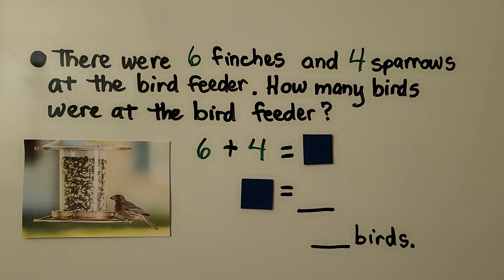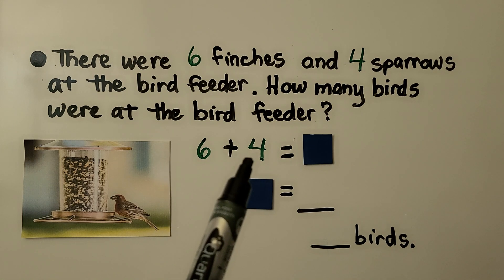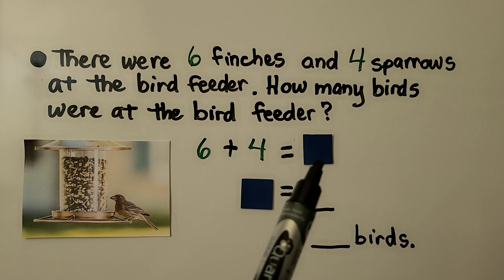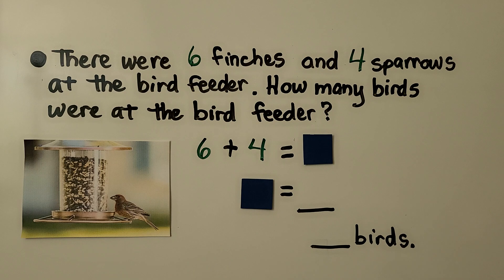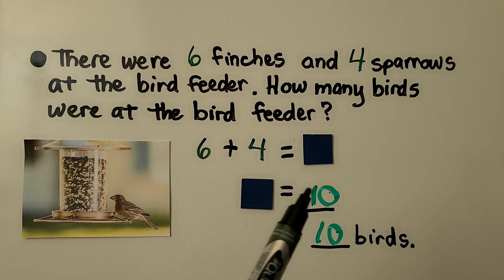There were six finches and four sparrows at the bird feeder. How many birds were at the bird feeder? We can add the six finches and the four sparrows — it's equal to an unknown amount, so we use our square. Six plus four equals 10. The square represents 10. There were 10 birds at the bird feeder.